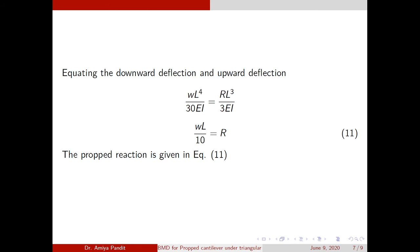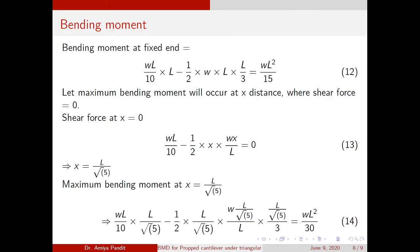So the propped reaction has been calculated as R = wL/10. Next, I am going to calculate the bending moment diagram. At the fixed end, the bending moment is: total force (wL/2) × (centroid arm) minus R × L, which gives the fixed-end moment as wL²/15.